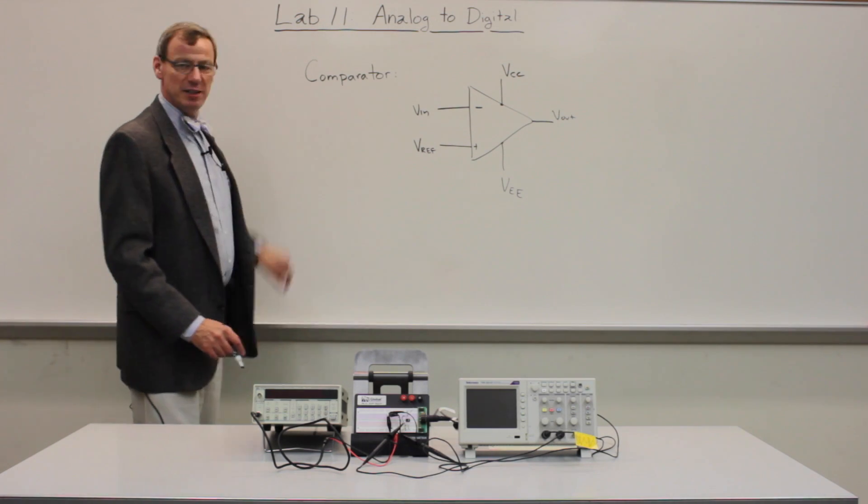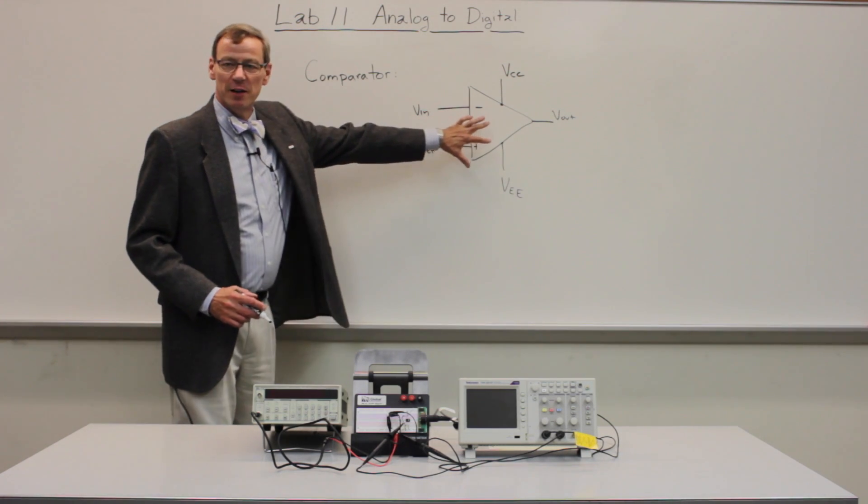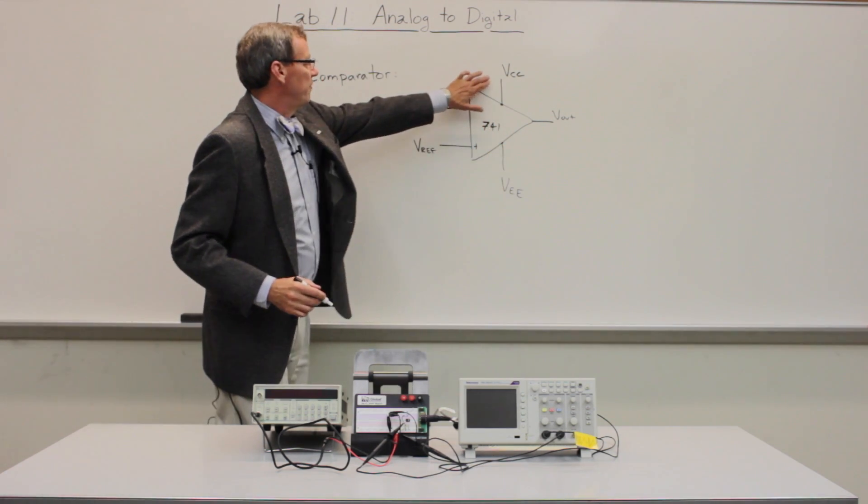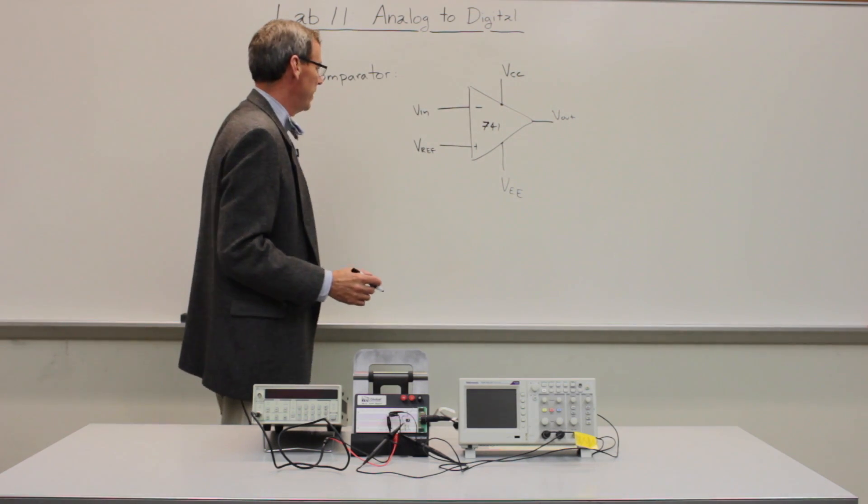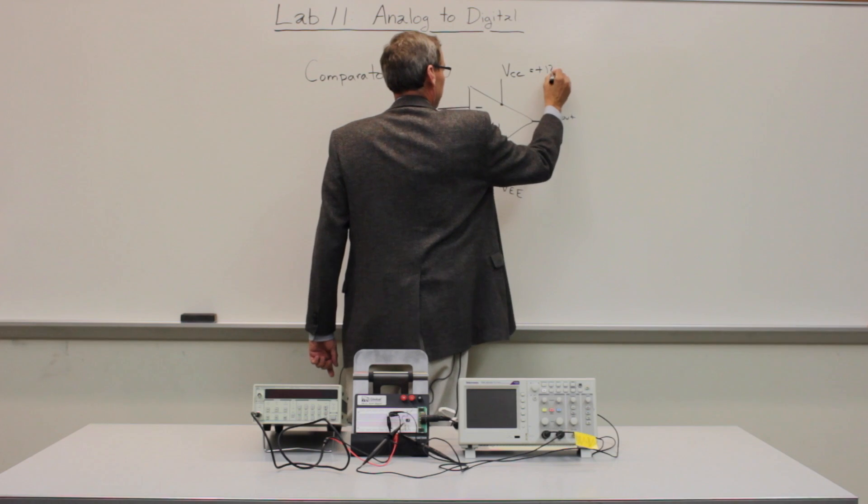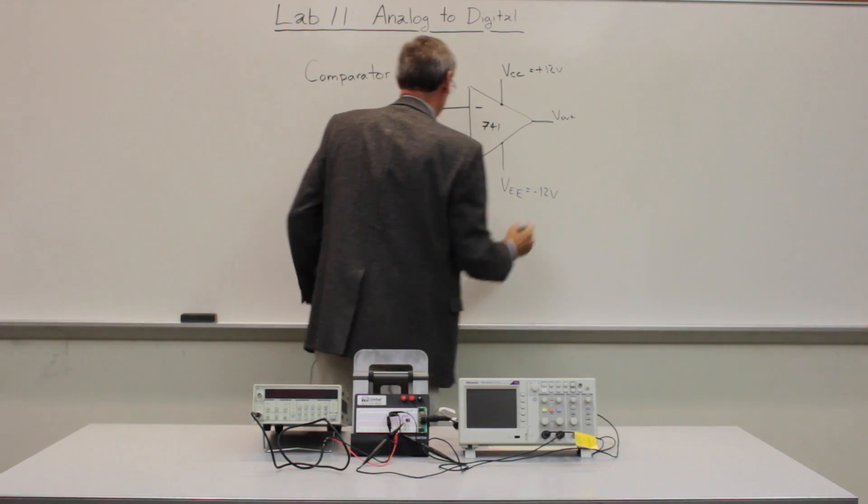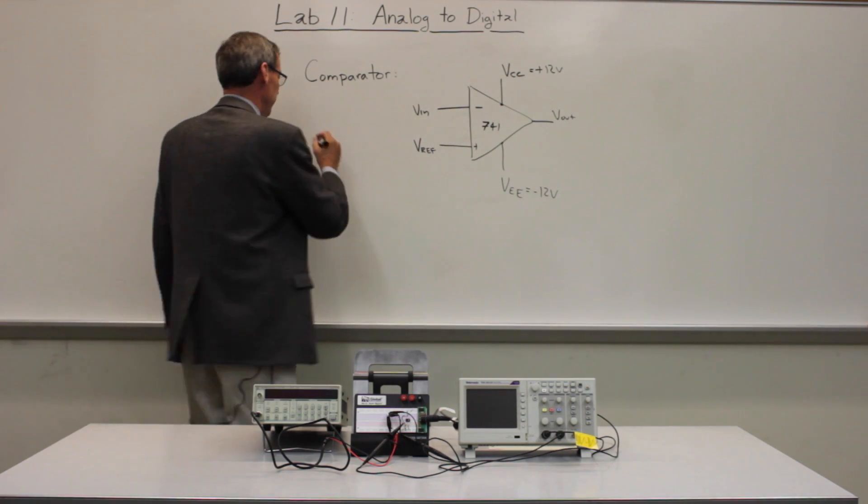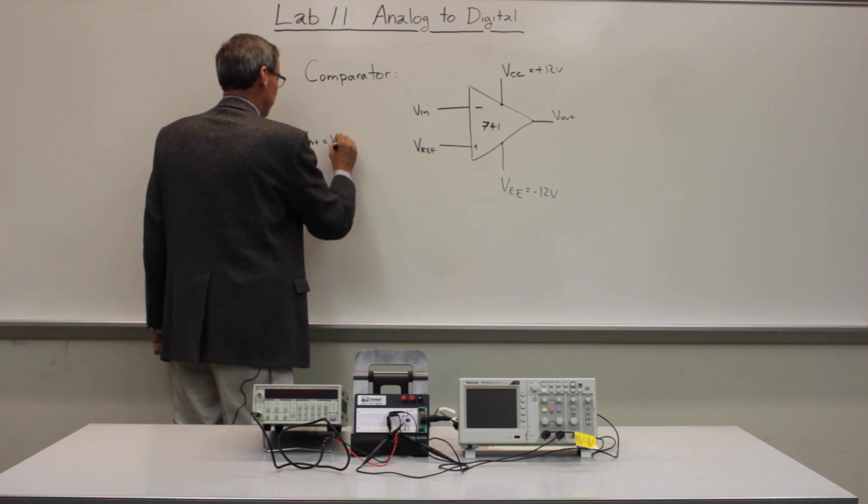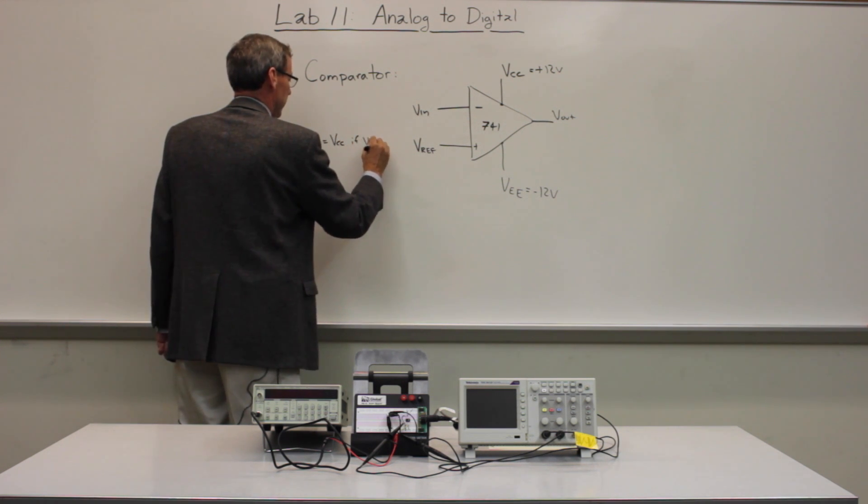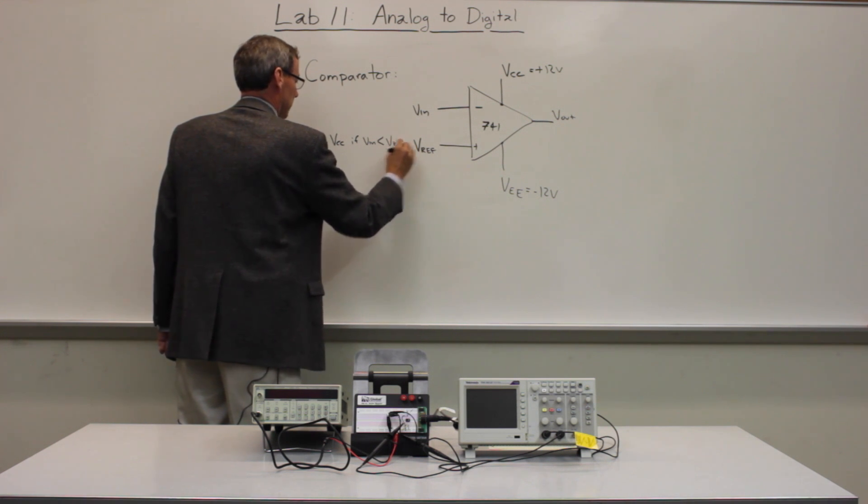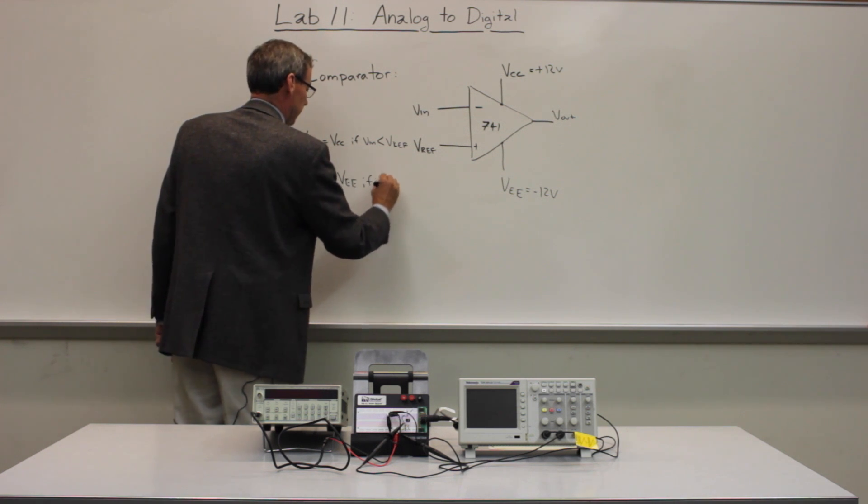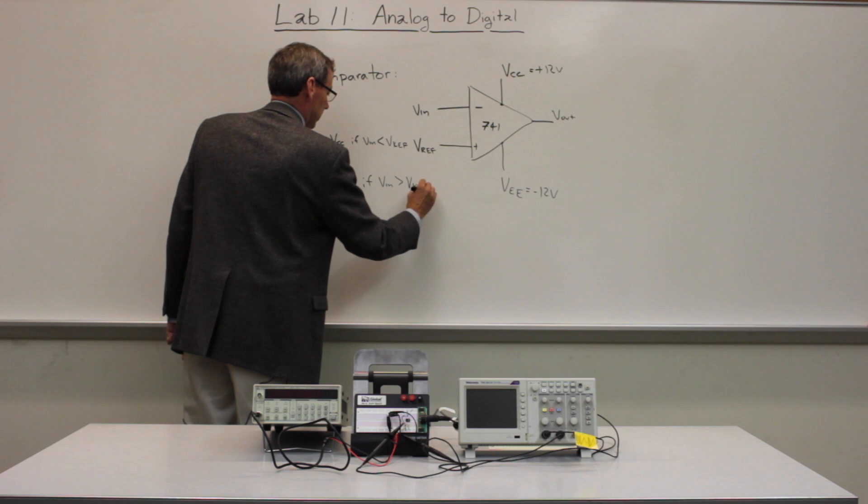In the next part of the lab, we're going to be building a simple comparator circuit, which is again based on our op amp, 741. And I've explicitly drawn VCC and VEE here, just so we remember that they're there. Those, in our case, are plus 12 volts and minus 12 volts. The comparator here basically looks at some reference voltage we set and the input voltage. Vout equals VCC if VN is smaller than the reference voltage, and Vout equals VEE if VN is greater than the reference voltage.